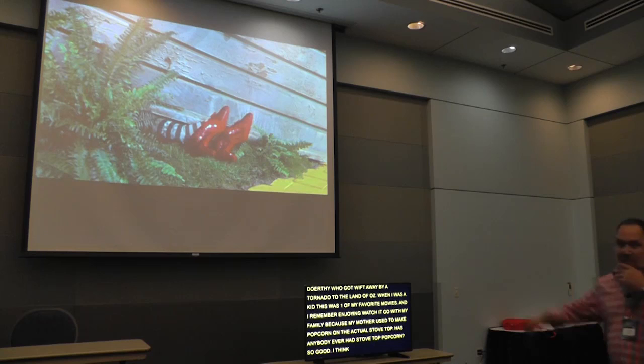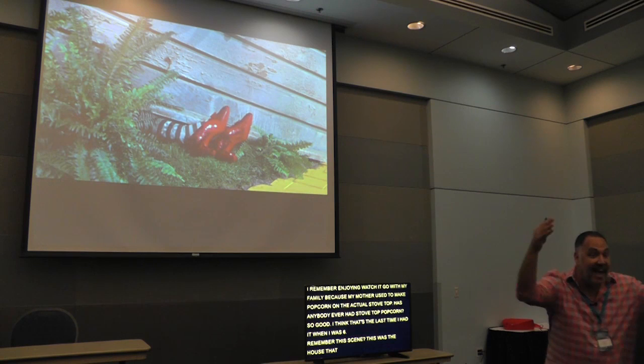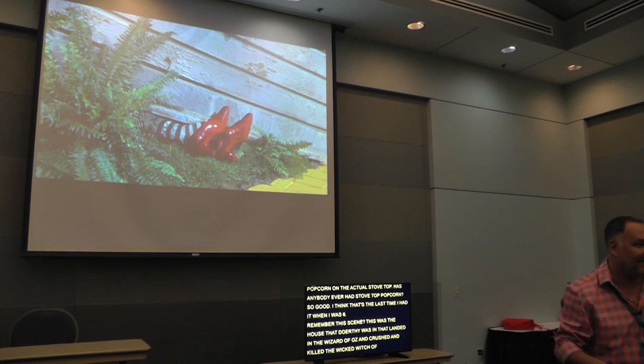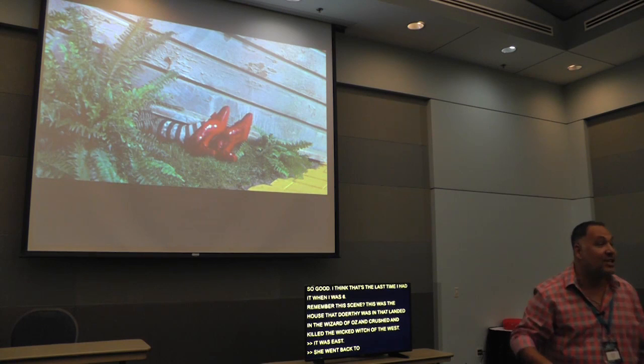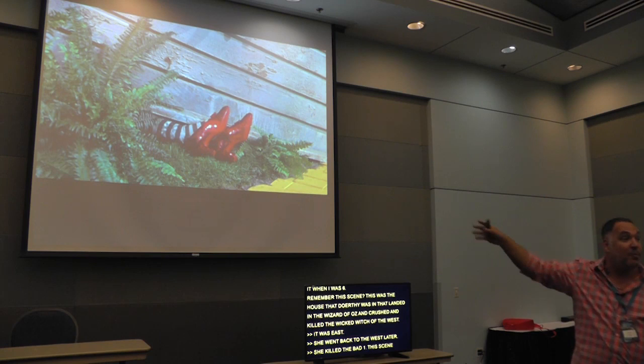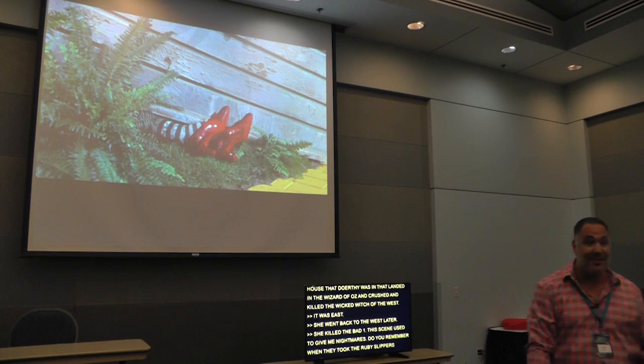This was the house that Dorothy was in that landed in The Wizard of Oz and crushed and killed the Wicked Witch of the East. This scene used to give me nightmares. Do you remember when they took the ruby slippers off and the legs curled up under the house? That was scary.